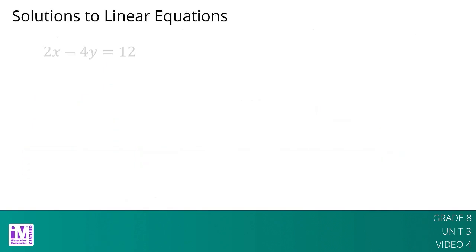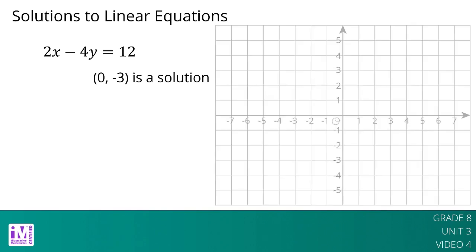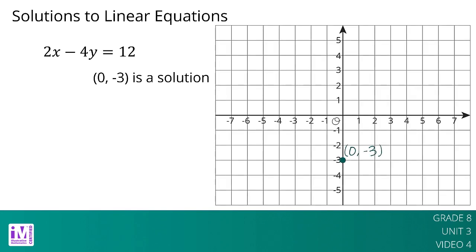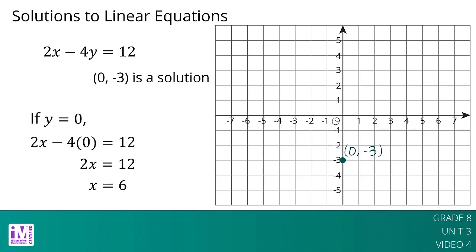Let's think about the linear equation 2x minus 4y equals 12. If we know that 0, negative 3 is a solution to the equation, then we also know 0, negative 3 is a point on the graph of the equation. Since this point is on the y-axis, we also know that it is the vertical intercept of the graph. But what about the coordinate of the horizontal intercept when y equals 0? We can use the equation to figure it out. Since x equals 6 when y equals 0, we know the point is on the graph of the line. Every point on this line is a solution to the equation 2x minus 4y equals 12.